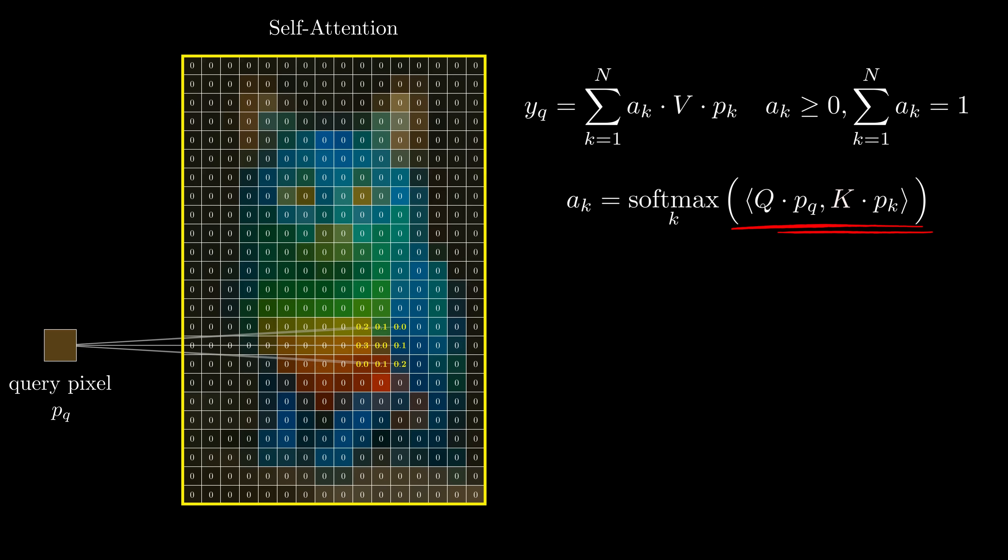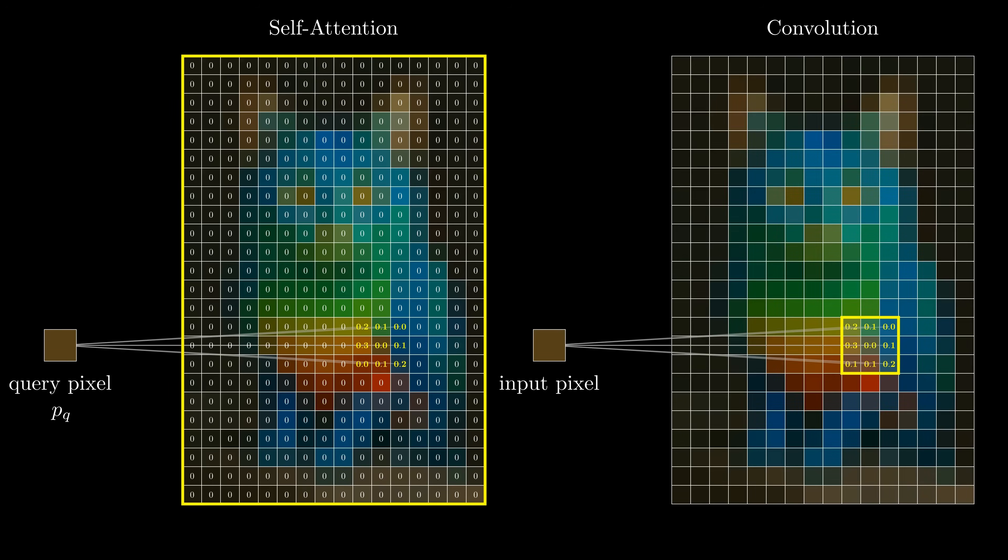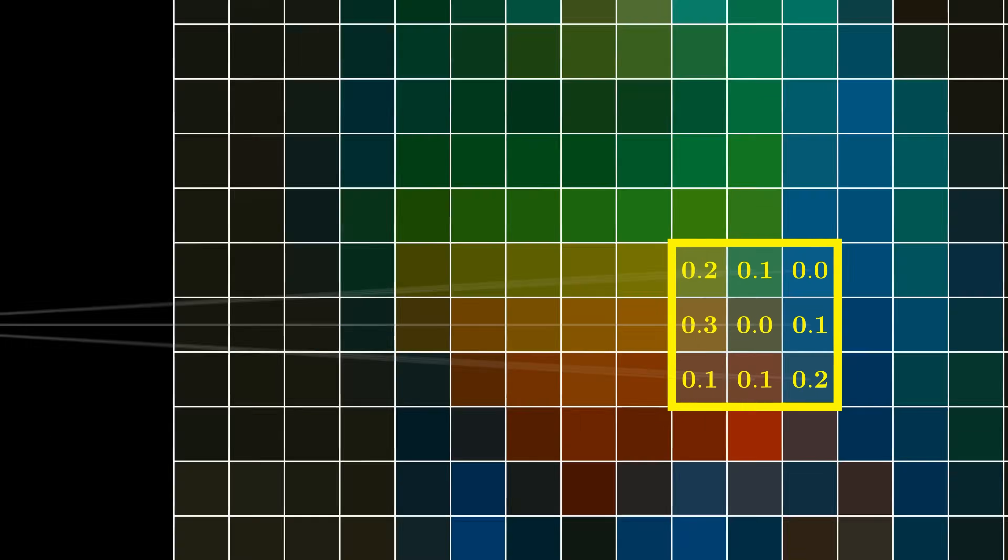Attention scores depend on the image itself. They are computed through a dot product of query and key pixels. A convolution kernel, on the other hand, is fixed. Its weights don't change with the input. So a single attention head cannot guarantee the same score pattern across all images. To reconcile this, let's think of convolution as applying a weight based on a pixel's relative position. Offset minus 1 gets weight 0.3, offset plus 1 gets weight 0.1, and so on. We can mirror this idea in self-attention with a simple variable change. We'll index keys relative to the query and then add a relative positional encoding to tell the attention score how far each key is from the query.